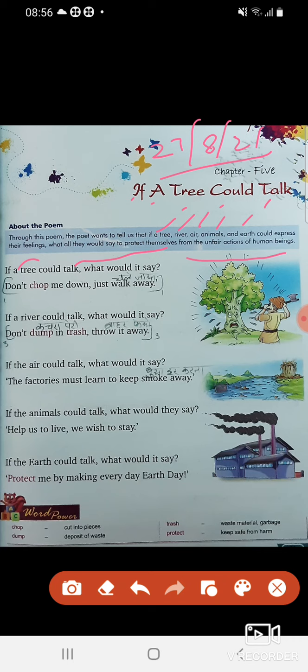So first we will read this poem, then we will learn the meaning of this poem. If a tree could talk, what would it say? Don't chop me down, just walk away. If a river could talk, what would it say? Don't dump in trash, throw it away. If the air could talk, what would it say? The factories must learn to keep smoke away. If the animals could talk, what would they say? Help us to live, we wish to stay. If the earth could talk, what would it say? Protect me by making everyday earth day.